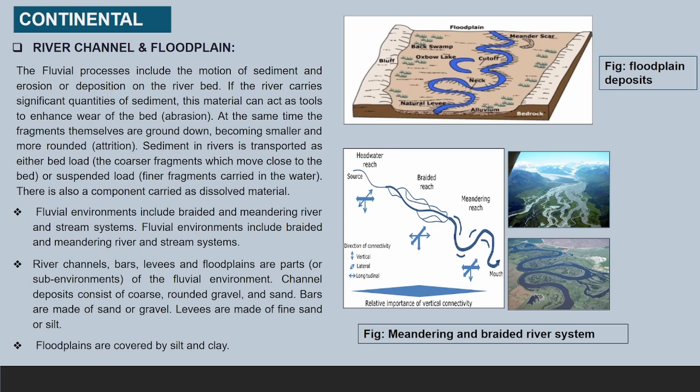Next is river channel and flood plain. The fluvial processes include the motion of sediment and erosion or deposition on the river bed. If the river carries significant quantities of sediment, this material can act as tools to enhance wear of the bed; at the same time the fragments themselves are ground down, becoming smaller and more rounded. Fluvial environments include braided and meandering river and stream systems. River channels, bars, levees and floodplains are parts of the fluvial environment.